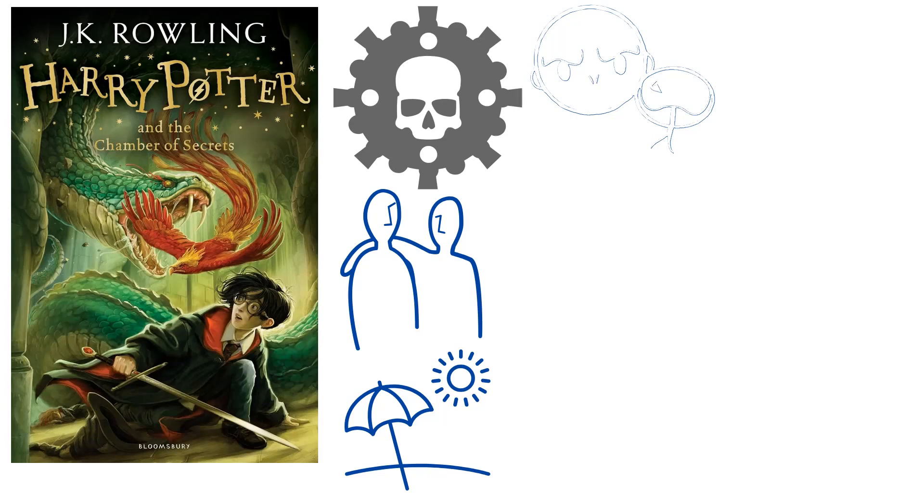However, for some reason, Voldemort was unable to murder young Harry and instead went into hiding.